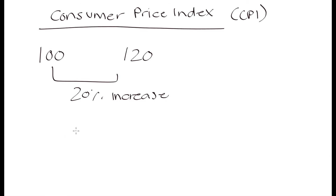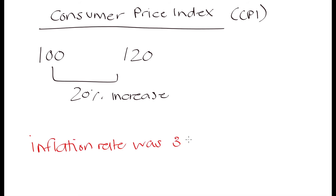Inflation is usually going to be given as a percentage, and that is generally a percentage per annum. So one might say that the inflation rate was 3% per annum — that is something you might see in a question. The question might ask you to determine what the change in prices is going to be if the inflation rate was 3% per annum, given the initial cost of the item, and you have to figure out how much it's going to be after a certain number of years.